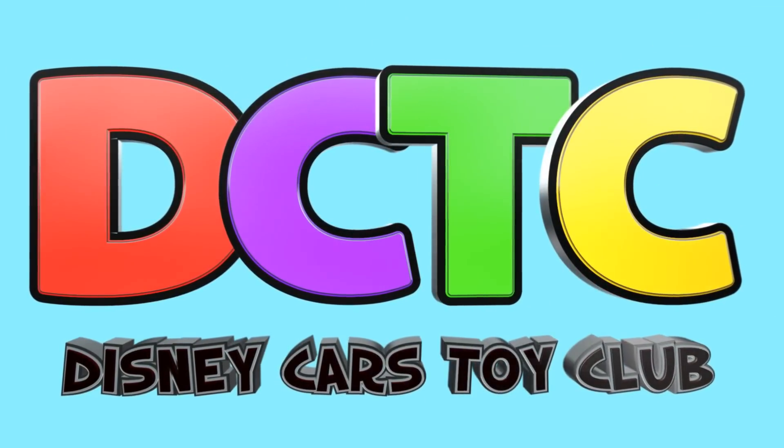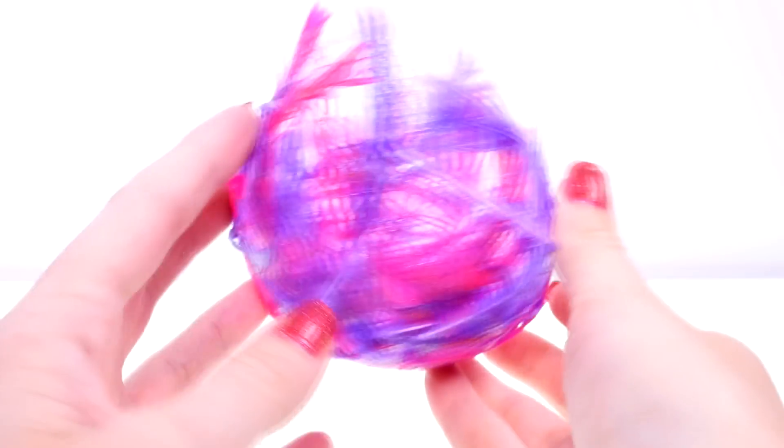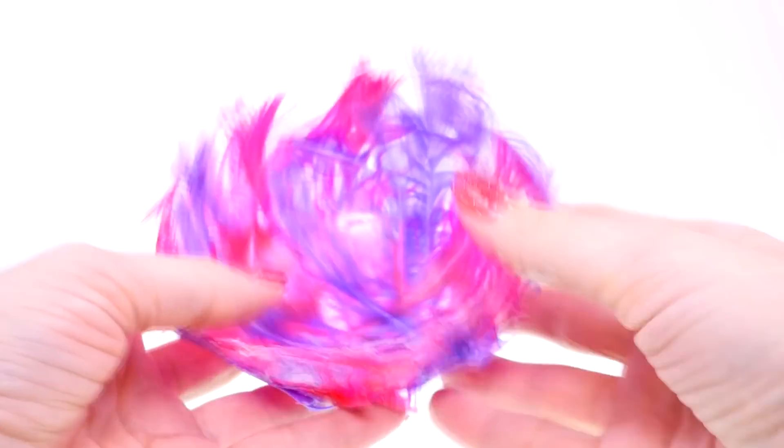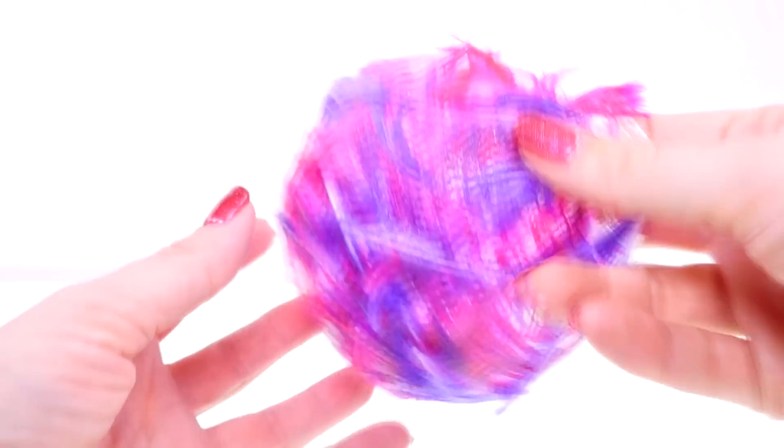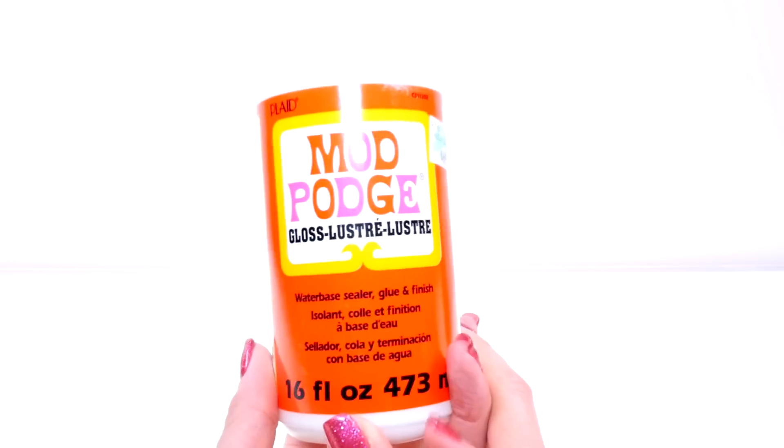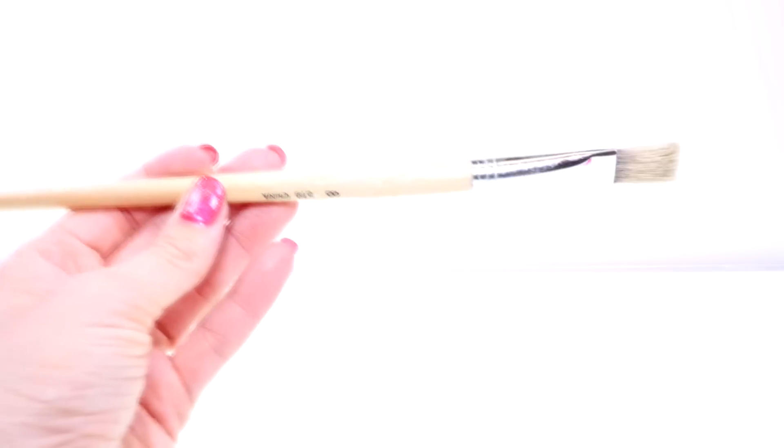Hey guys, welcome back to the channel, it's Kaylee and today I'm going to show you how to make this really awesome feather bowl. So what you'll need for this project is an old Tupperware like this, some Mod Podge, a balloon, scissors, and a bunch of pink and purple feathers along with a brush.